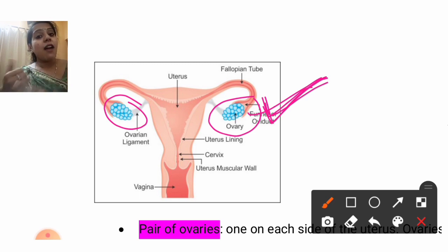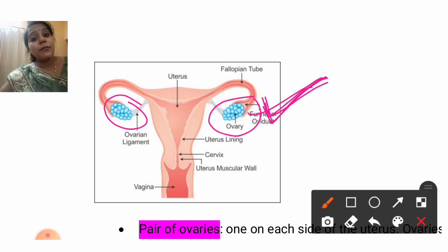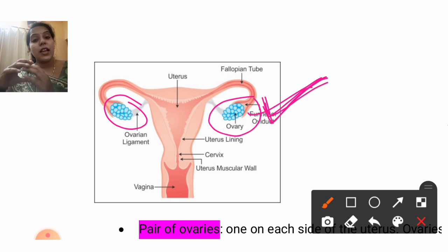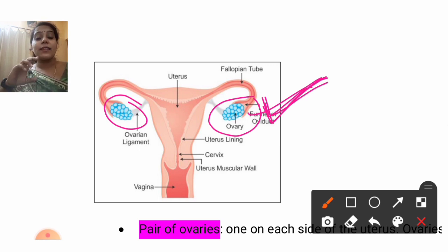In females, secondary sexual characters include the start of the menstruation cycle, development of mammary glands — which are important for feeding milk — appearance of pimples, enlargement of breasts, hips, and growth of hair in the genital and private parts. These changes occur due to the secretion of female hormones estrogen and progesterone.